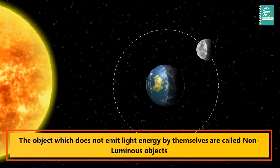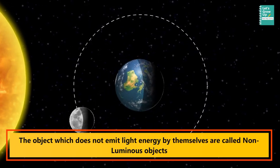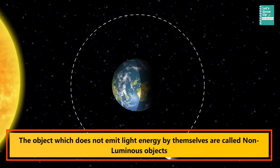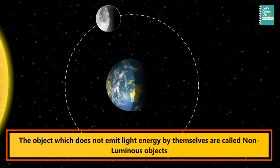The objects which do not emit light energy by themselves are called non-luminous objects. Non-luminous objects are seen due to luminous objects.